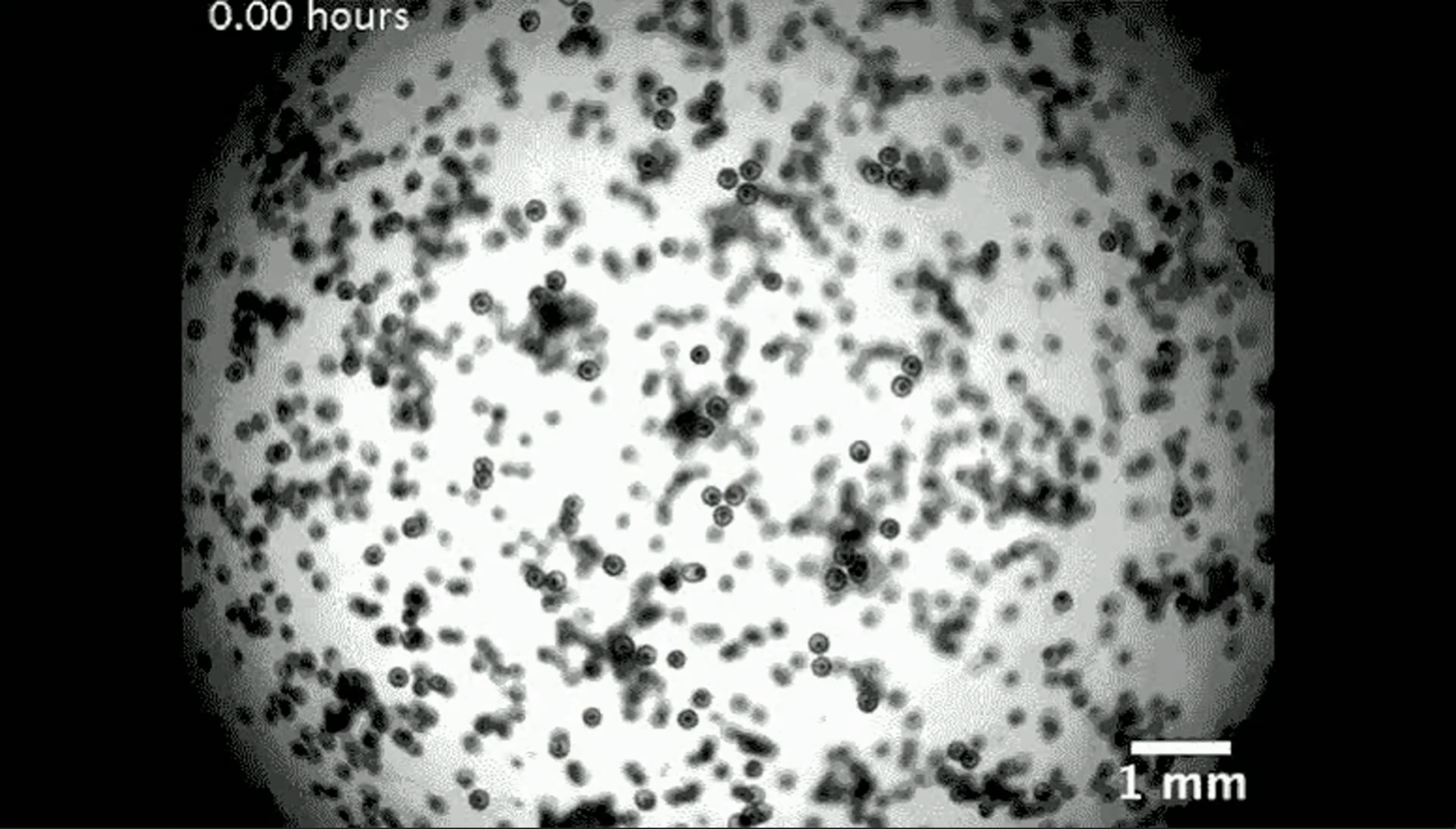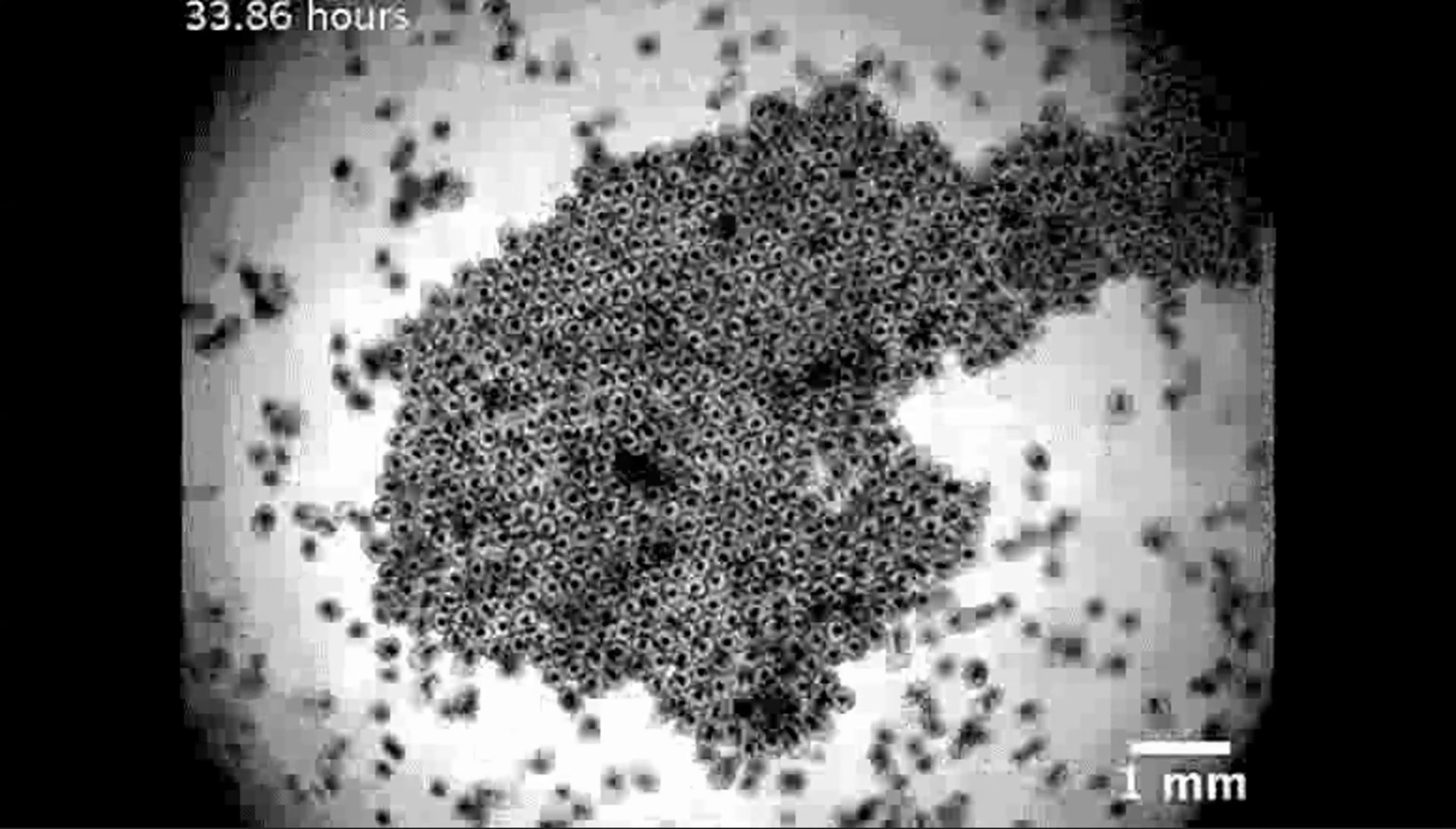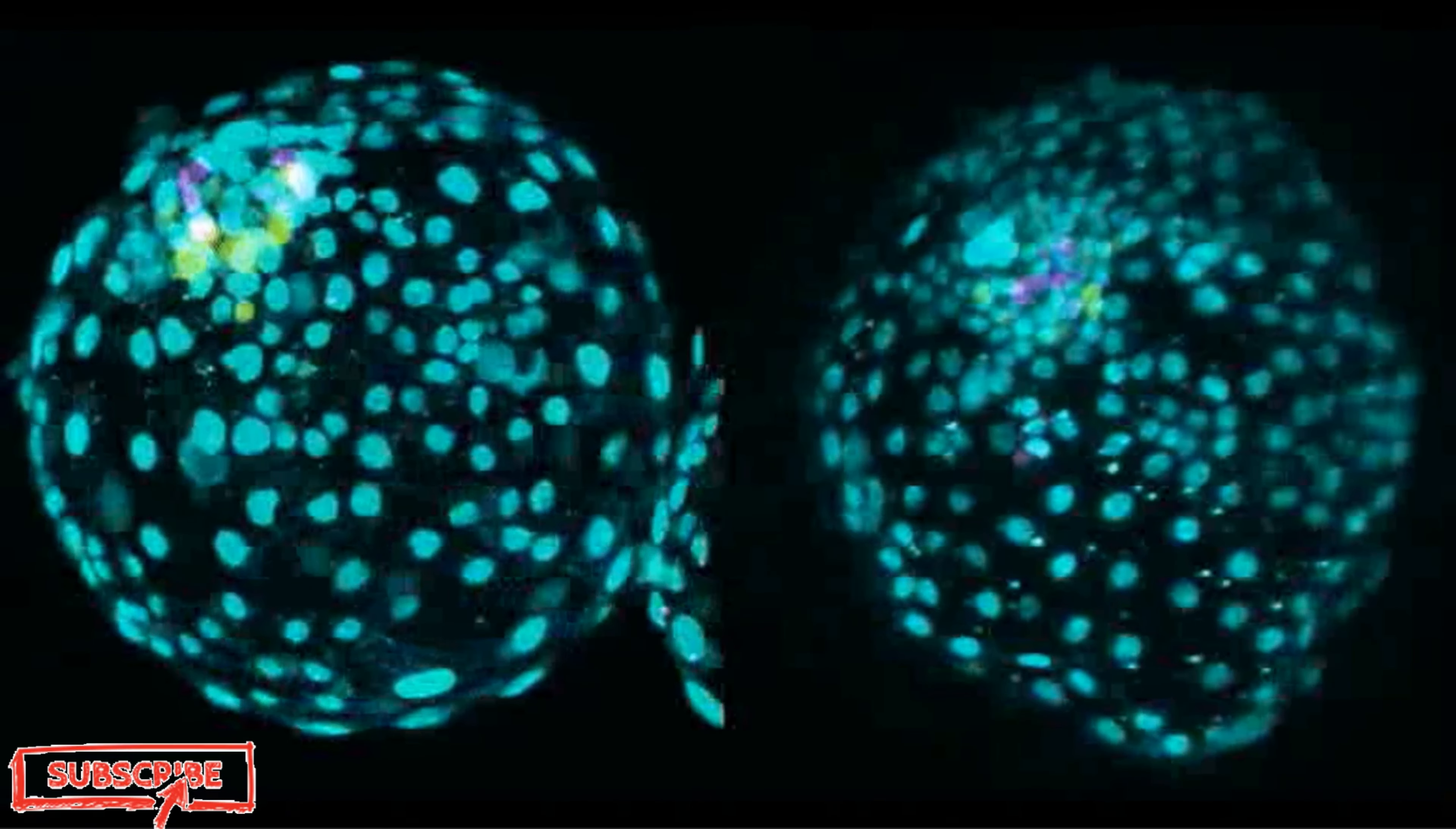During her interview with CNN, she stated that the structures her laboratory has generated are unique in that they contain germ cells that have the potential to differentiate into eggs and sperm. Zernika-Getz emphasized that these are not human embryos, but rather models of embryos. Despite this, they bear a striking resemblance to human embryos and serve as a valuable tool for investigating why a large number of pregnancies end in failure.